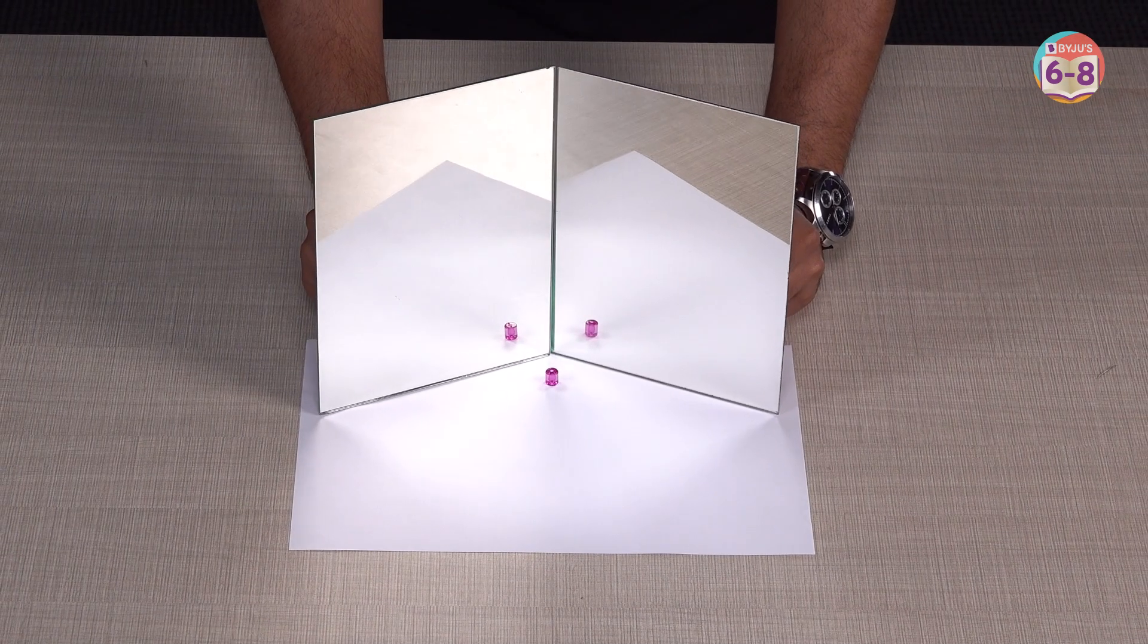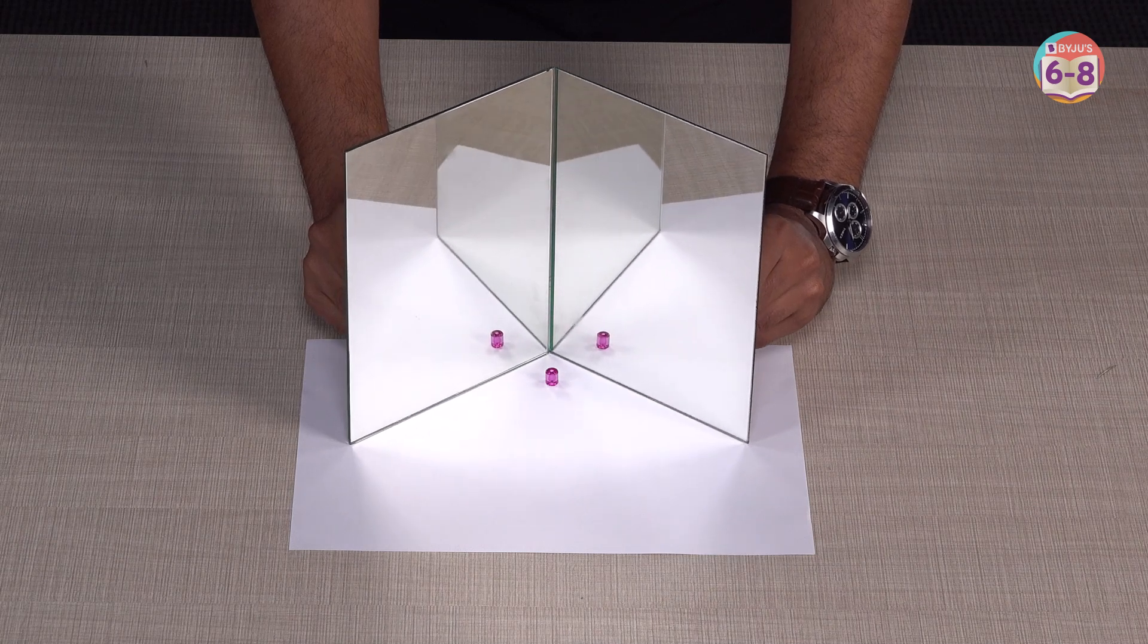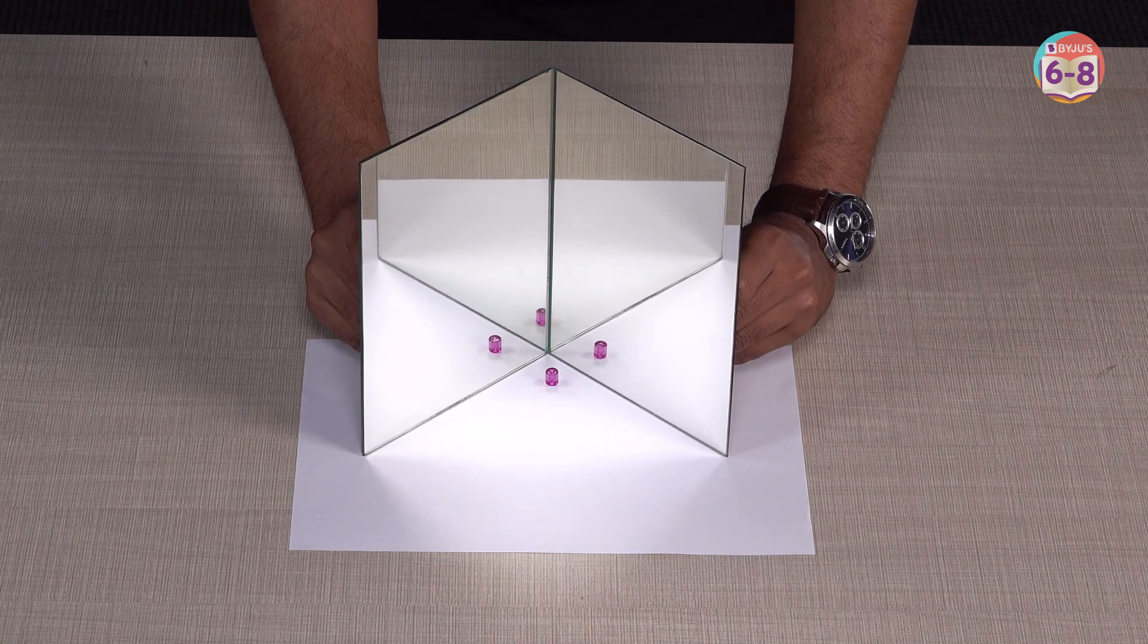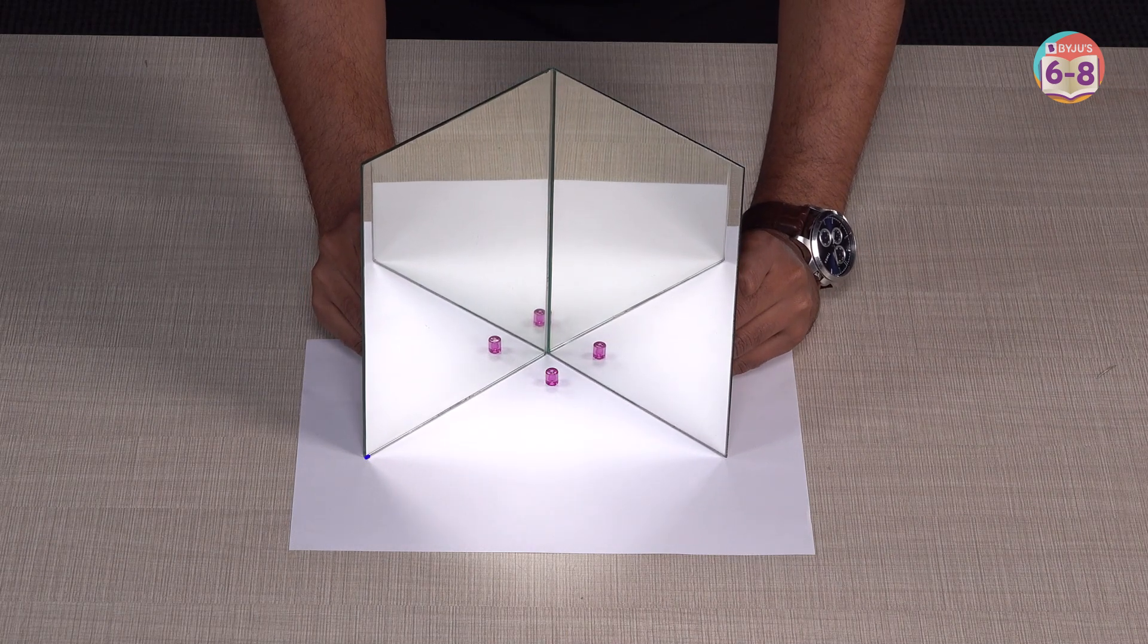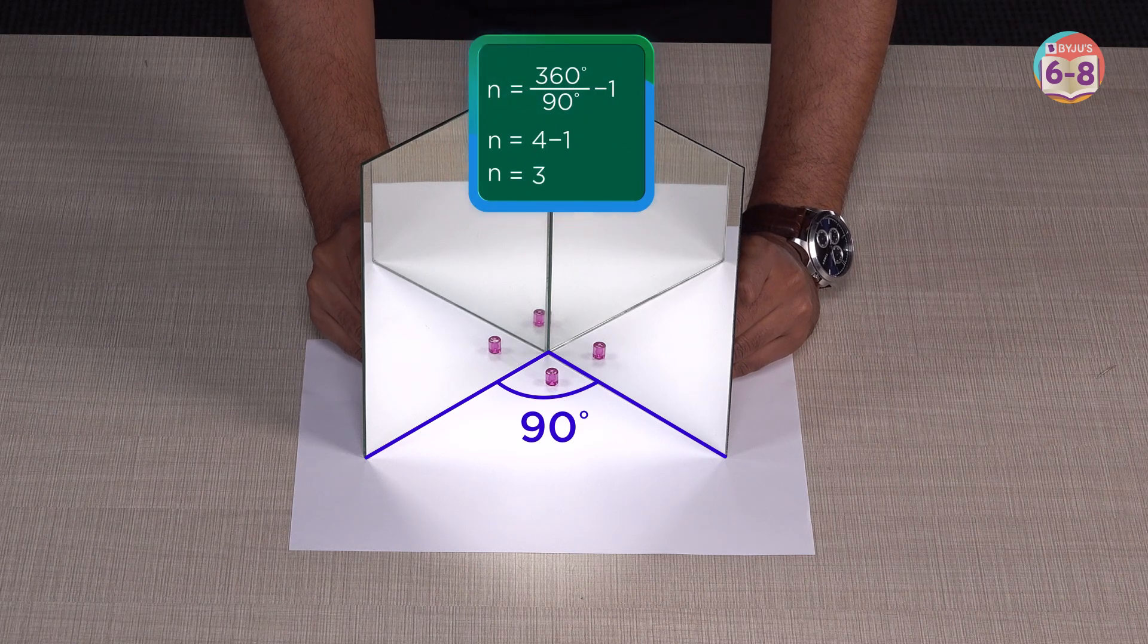Alright, if I keep reducing the angle, you'll reach a point where you'll see three images. Yes, this is where the angle is 90 degrees, the formula says the same thing.